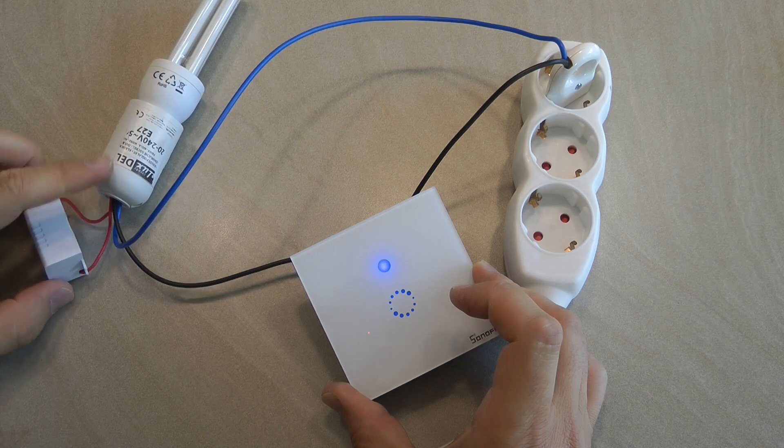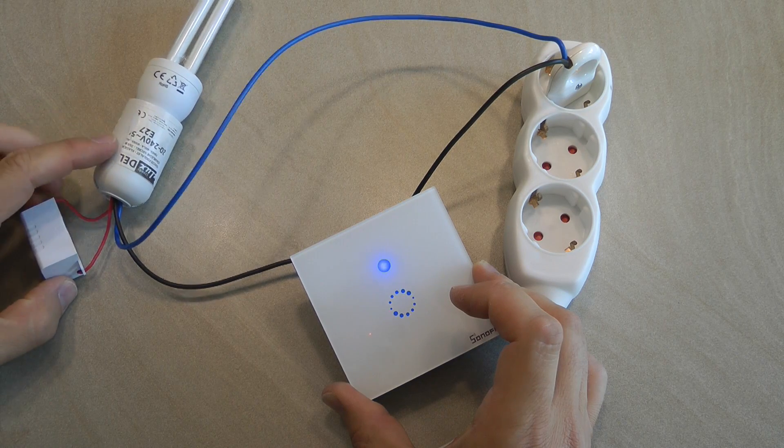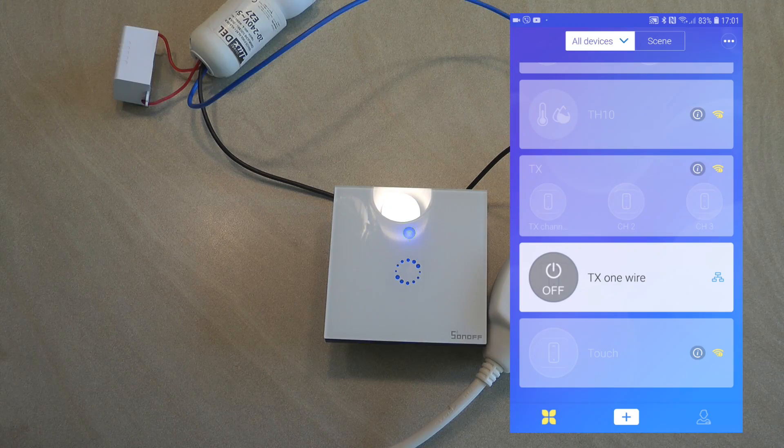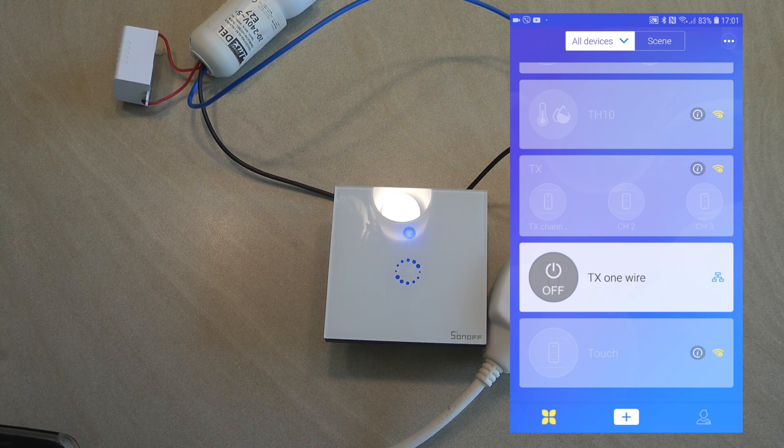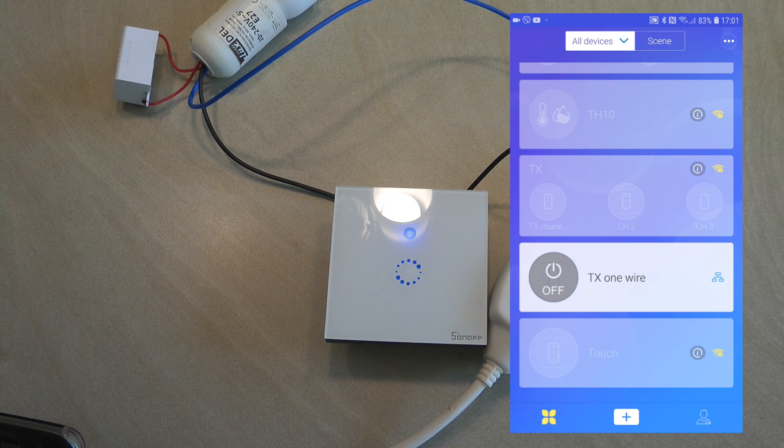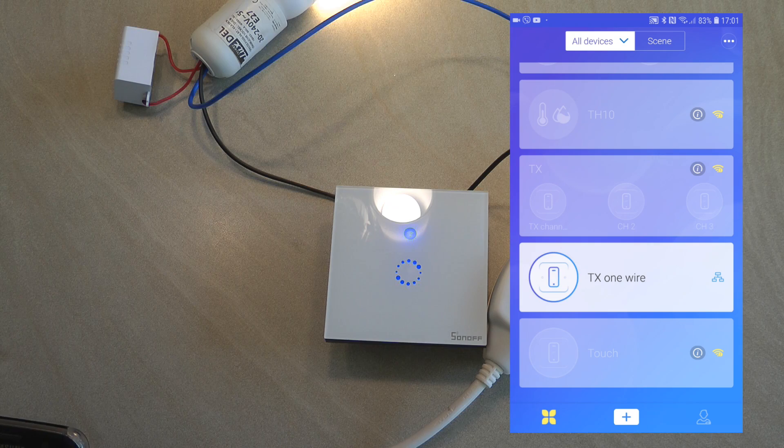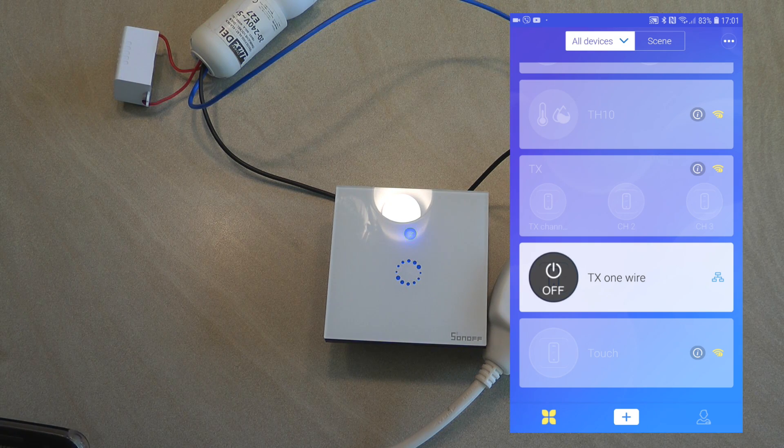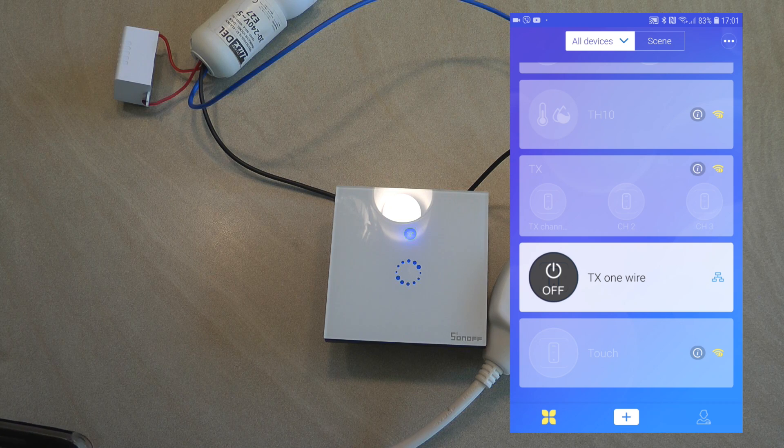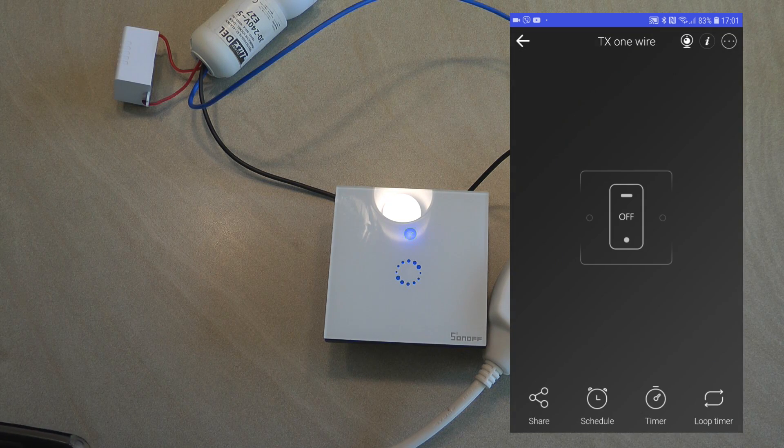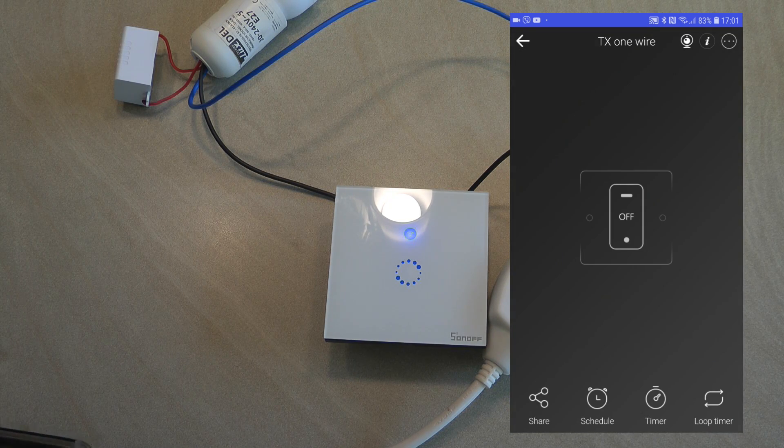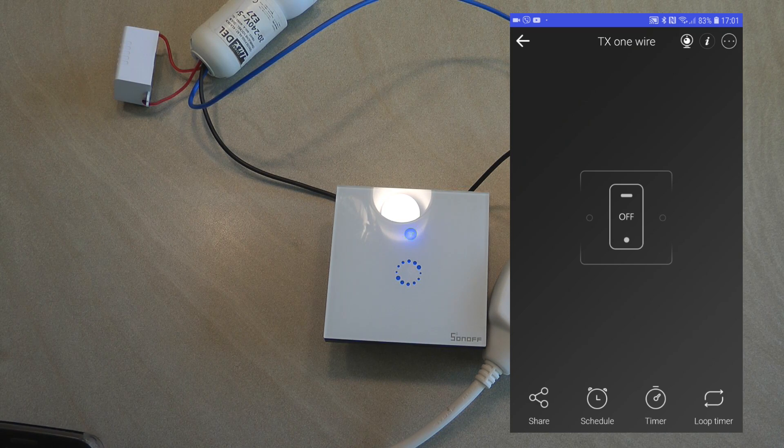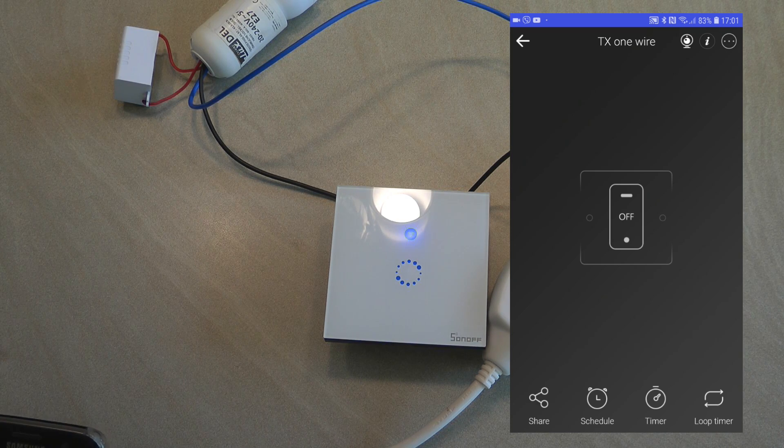Of course you have to get this unit connected between the two terminals of your load. And when it comes to the eWeLink app, this unit appears just like any other TX unit. It is a one gang unit so you only have one touch face or one button face and as you can see it also supports the LAN mode which I haven't covered yet but I want to make a video on that.